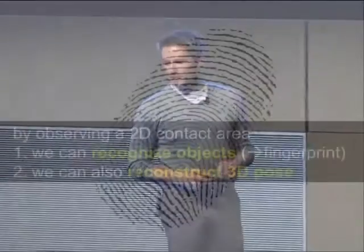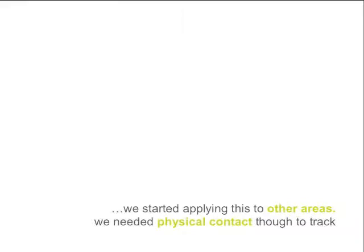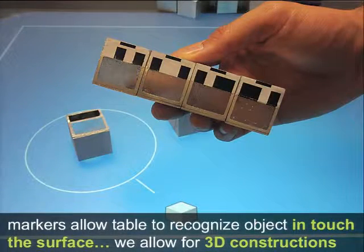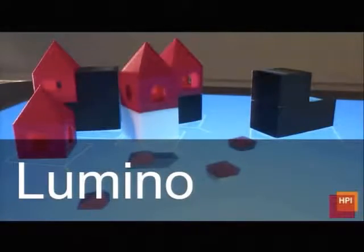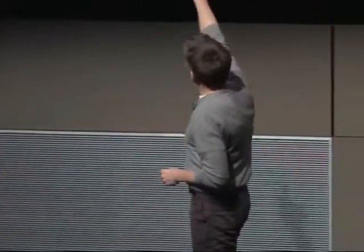When we were done with RidgePad, we realized we could reconstruct the 3D position in space of objects. We did this in a follow-up project called Lumino, on Microsoft Surface. Surface can recognize markers, so placing building blocks on the surface lets you recognize what's going on. We added something to allow recognizing objects in 3D space. We filled the blocks with fiber optic bundles—this pipes light up and down without blurring, so the table can see through the blocks. We can use this to actually recognize the 3D construction of these objects.